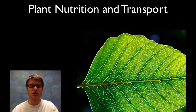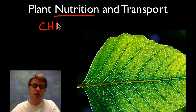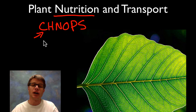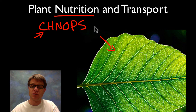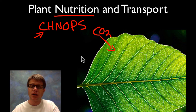Before we get into that, we should talk about what plants need — in other words, what is the nutrition that plants count on? Well, it's the same thing as in you. They need CHNOPS: carbon, hydrogen, nitrogen, oxygen, phosphorus, and sulfur. Unlike us, they take carbon in as carbon dioxide through their leaves. They absorb water — getting hydrogen and oxygen — through their roots, and the other things like nitrogen, phosphorus, and sulfur are all taken in through their roots as well.